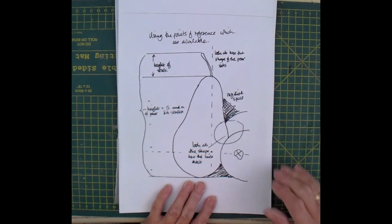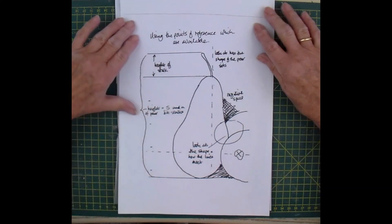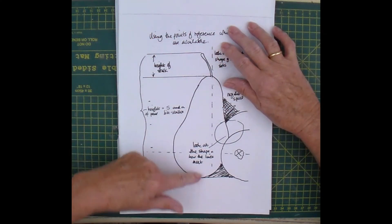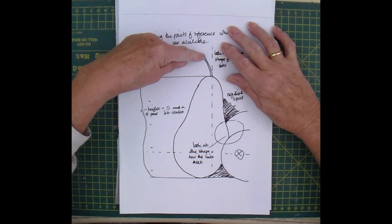Now, a simple way of looking at things is to say, okay, right, this is the pear, the height of the pear, including the stalk.